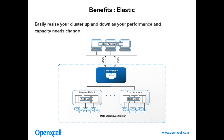Amazon Redshift is elastic, meaning it is very easy to scale up and down as per performance and capacity requirements. It takes care of resizing clusters without any downtime for read access. This can be done in just a few clicks on the Amazon console, so you can easily increase or decrease nodes as per the requirement.